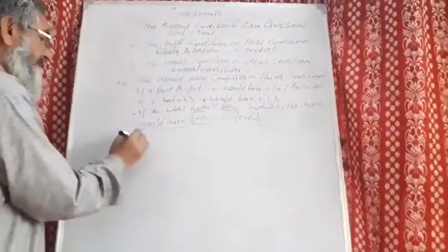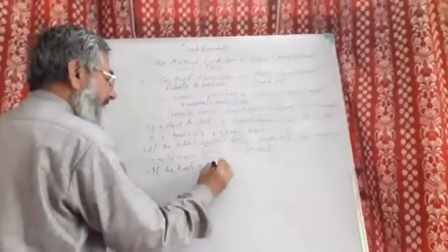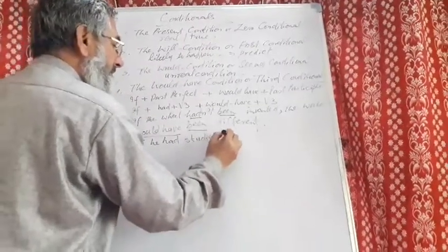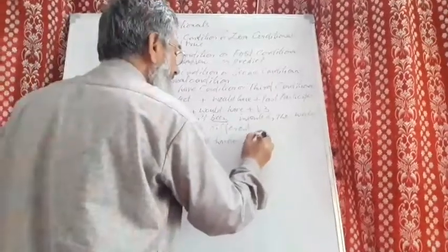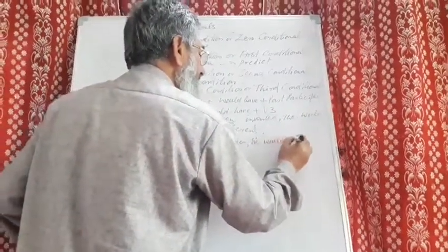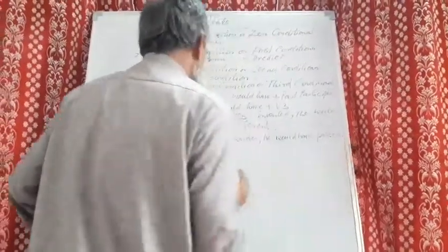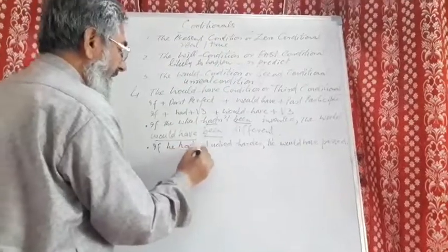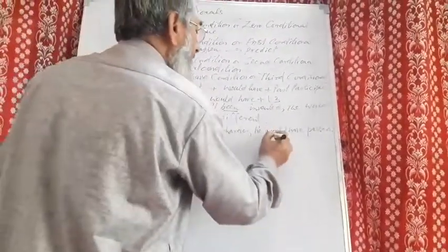Another example: if he had studied harder, he would have passed. Again, in the if-clause we have had plus past participle, and in the main clause we have would have plus past participle.